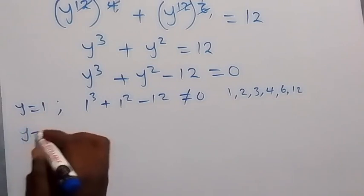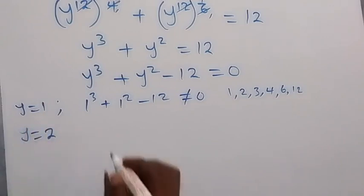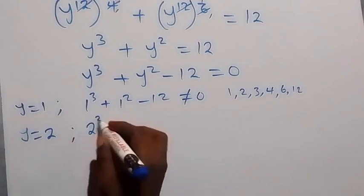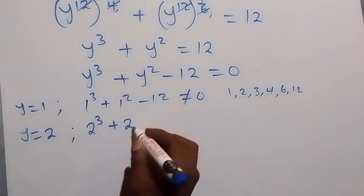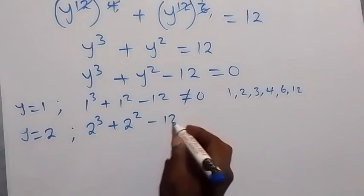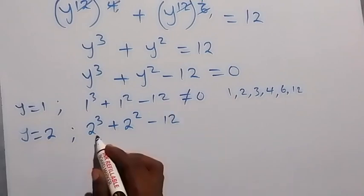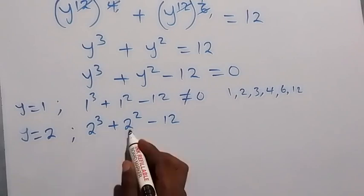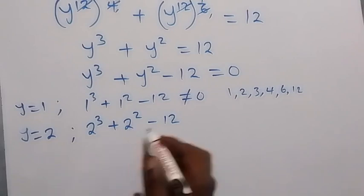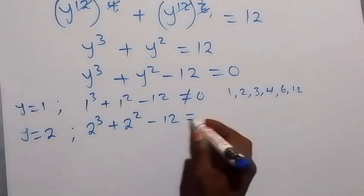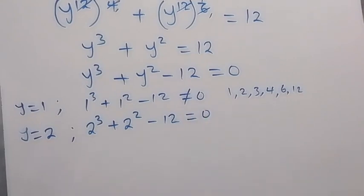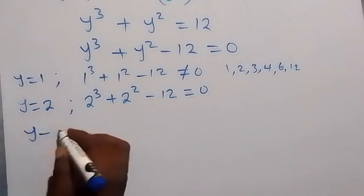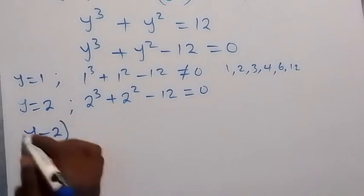What about y equals 2? Substituting 2: 2 cubed plus 2 squared minus 12 equals 8 plus 4 minus 12, which is 12 minus 12, equals 0. So y equals 2 is a root, meaning y minus 2 is a factor.